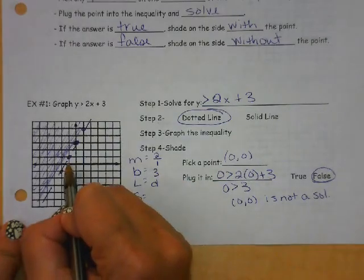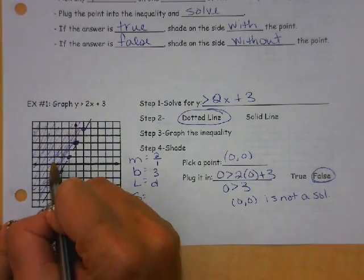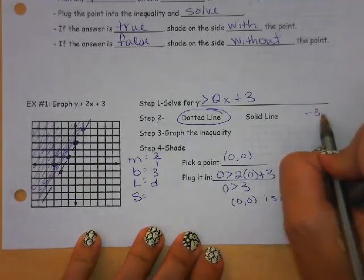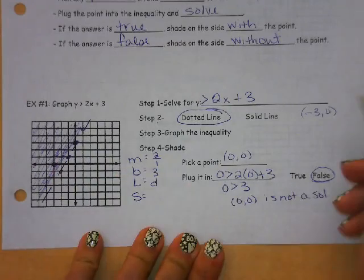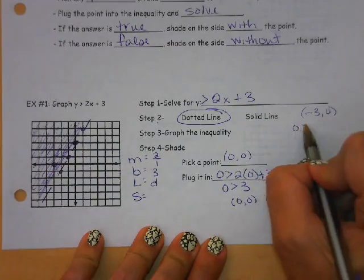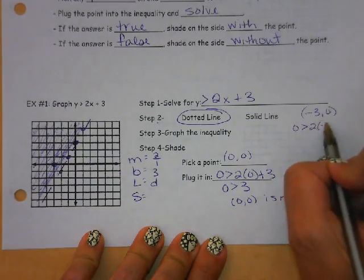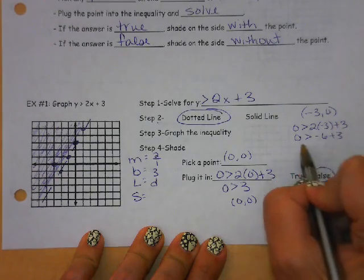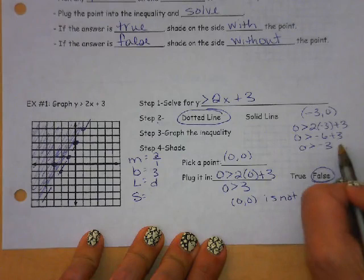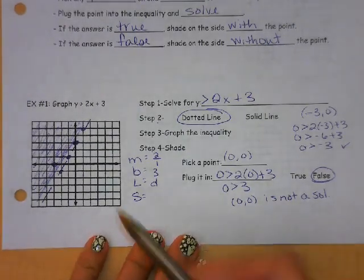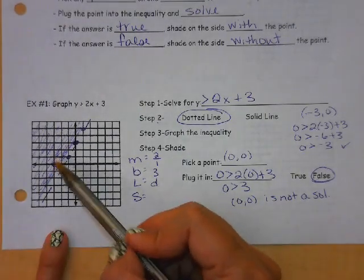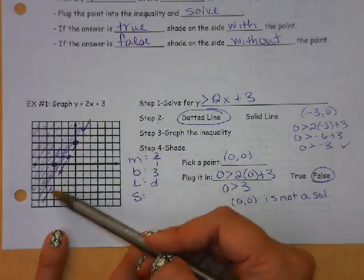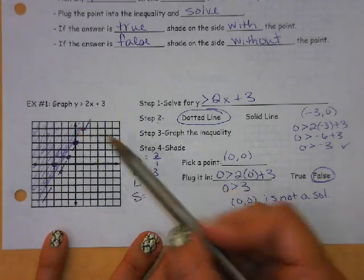For example, if I pick, let's say, negative 3, 0, which happens to be right here, I could say 0 greater than 2 times negative 3 plus 3. Negative 6 plus 3 is negative 3. This is a true statement, and I can see that it is, in fact, in the shaded region. You do not want to pick a coordinate on this line. It is a dotted line, so these are not solutions.